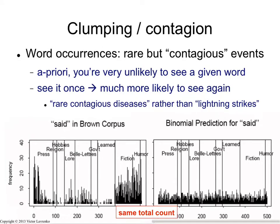Words, overall, are rare events. A word occurring in a document is rare, especially if it's a content-bearing word — so something like artwork. You don't expect to see artwork very often in any random collection of texts. But what makes words interesting is that their occurrence is a contagious event. Once I see an occurrence of a word, I'm much more likely to see an occurrence of the same word close by, in the same document.